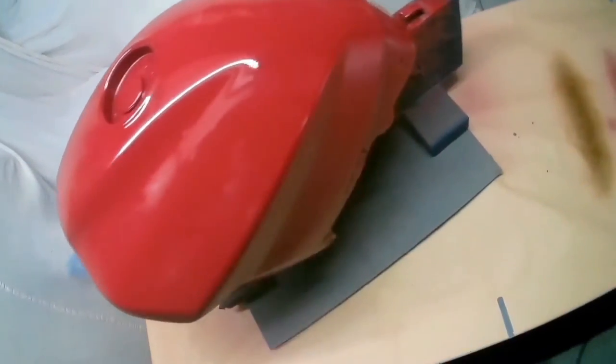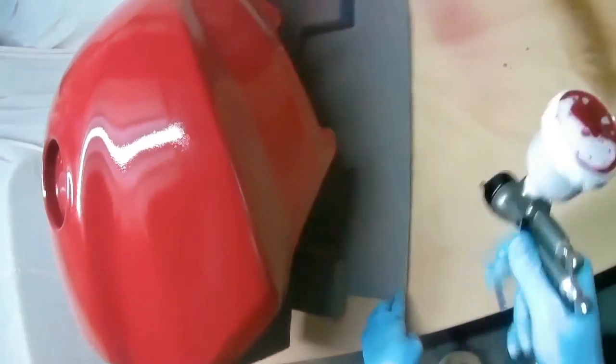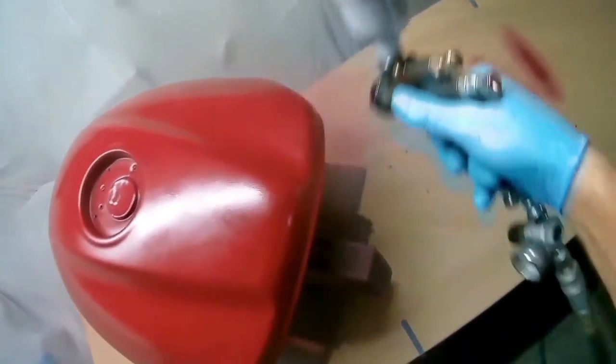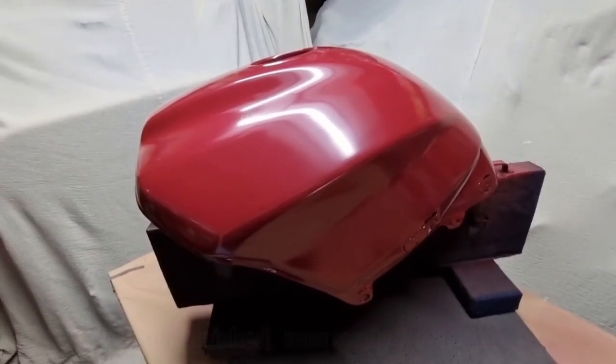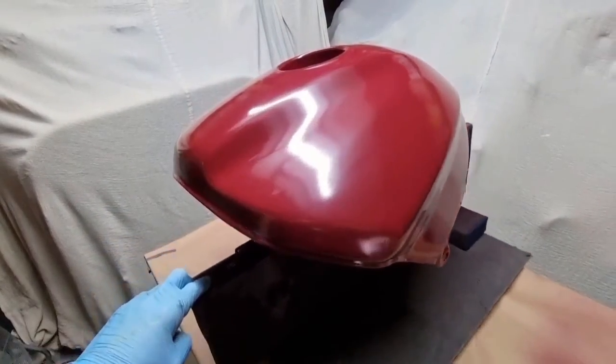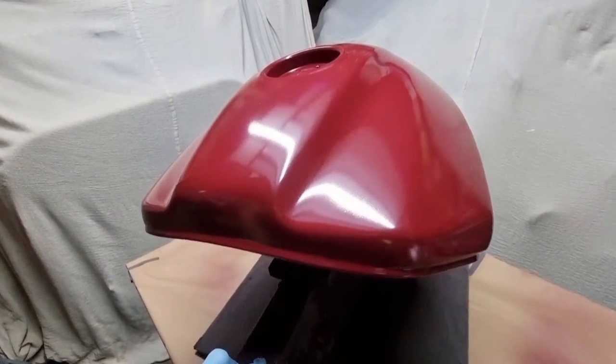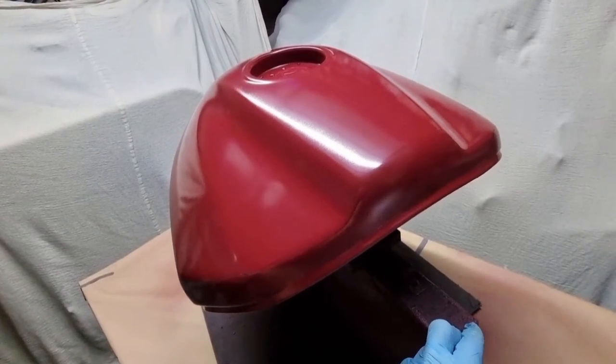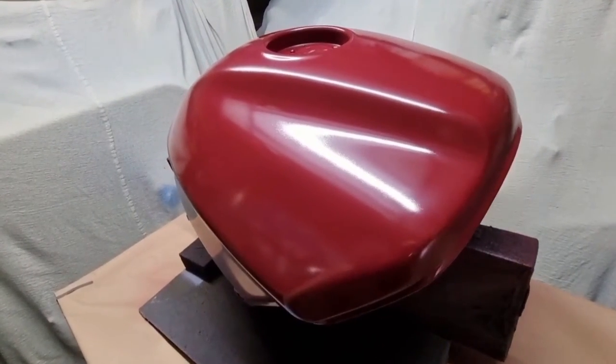But I found for base coat, all I needed to use it at was about 1.4 bar, which is about 21 PSI, something like that. And for clear coat, I bumped it up to 1.5 bar, which is what is recommended. It's recommended to be used at 1.5 bar, which is about 23 PSI, something like that. So it's quite a low-pressure gun. And you'll see on the video that there's not loads and loads of overspray. So it's good if you don't want loads of overspray.